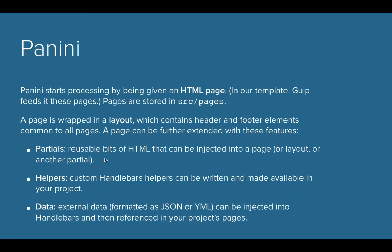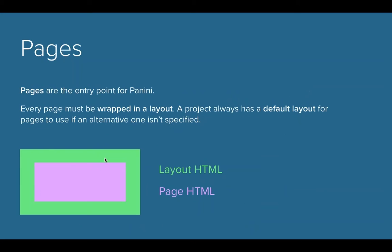We have helpers that can be written, and I'm going to show you some real-life examples of helpers. Then there's data — you can actually store data in JSON or YAML files that you can reuse over and over again inside your pages or your partials, which is really awesome.